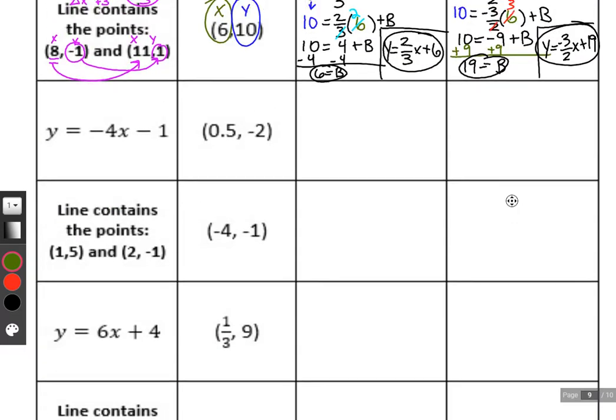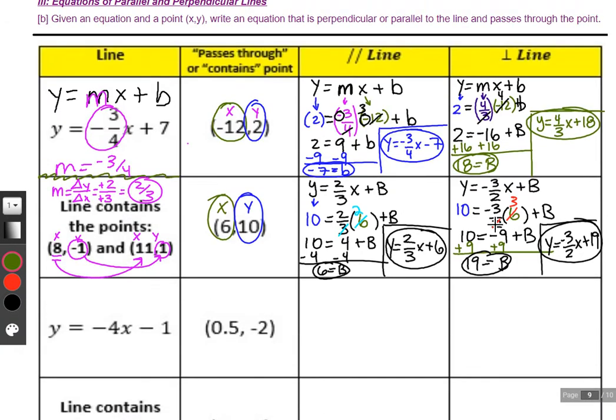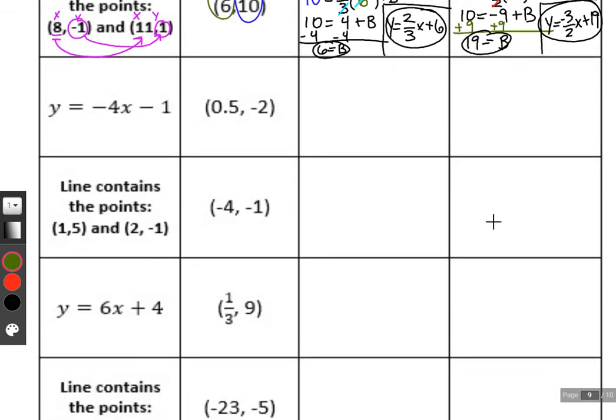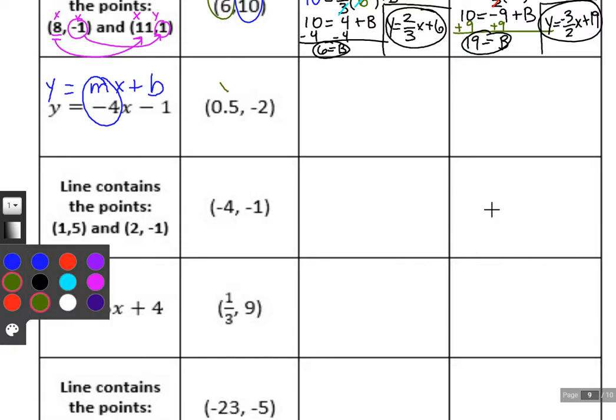We have to write an equation that's both parallel and perpendicular, given the information. We have to write a line, which means we have to find slope and find y-intercept. The first piece of information we're given is an equation. We know we can just read the slope off of this. The slope, in this case, is going to be minus four. And we're given this point, so we have a temporary x and a temporary y to work with.